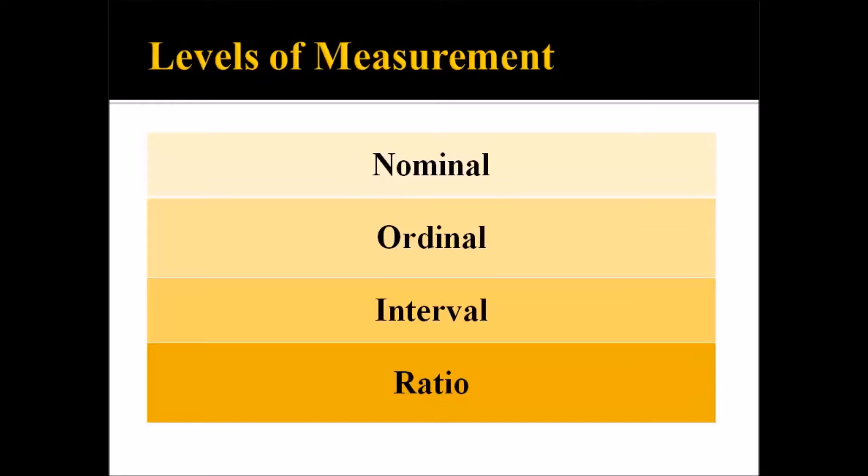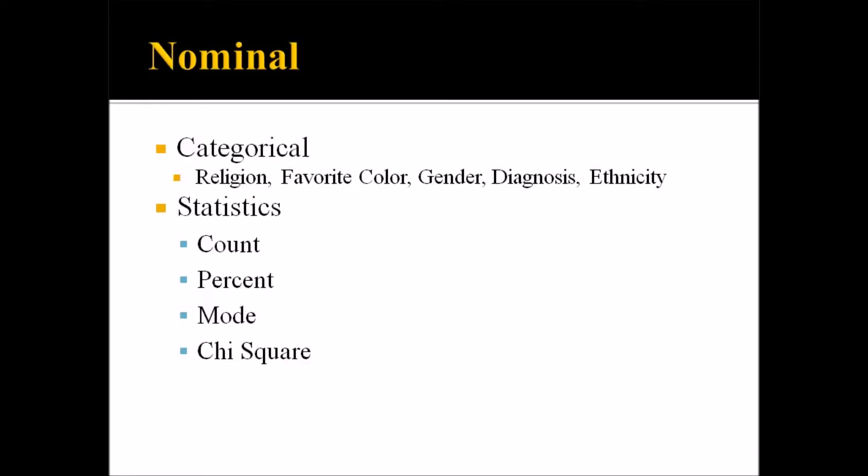The first one I'll discuss is nominal. Nominal is also referred to as categorical, and at the nominal level of measurement, there is no ranking. Examples would be religion, a participant's favorite color, gender, a diagnosis, or ethnicity.